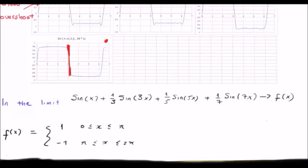So in this particular case, in the limit, sin x plus 1 third sin 3x plus 1 fifth sin 5x plus 1 seventh sin 7x is able to represent f of x. And in the limit, it goes to f of x is equal to 1 from 0 to pi and minus 1 from minus pi to 2pi. So this is in fact a 2pi periodic function.